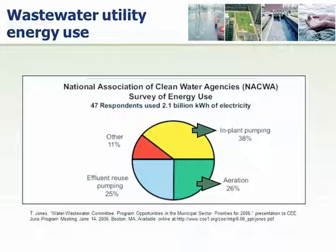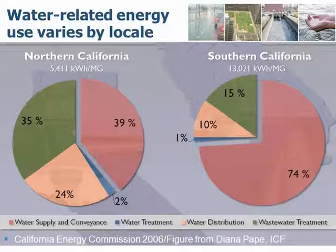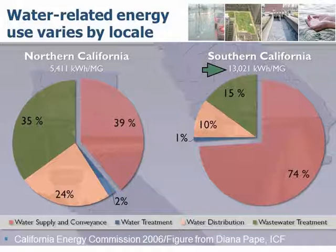A good example is California: the water supply energy footprint in Southern California is more than twice that of Northern California, with almost all of that increase associated with conveyance — water is pumped from the Sierra Nevada Mountains over long distances for both agriculture and potable supply. This makes it clear that if we're going to build more resilient, energy-efficient water infrastructure, optimizing conveyance and treatment attributes is critical.